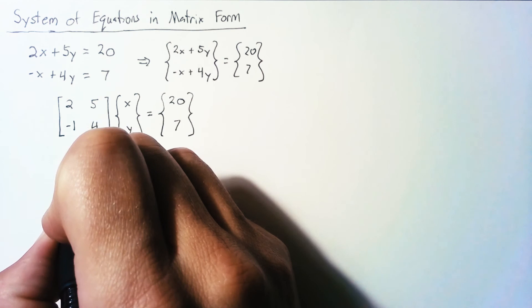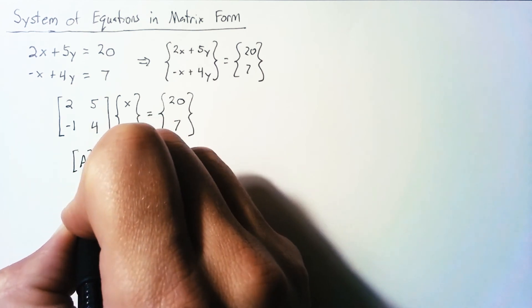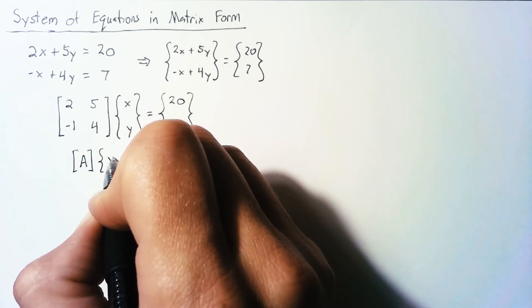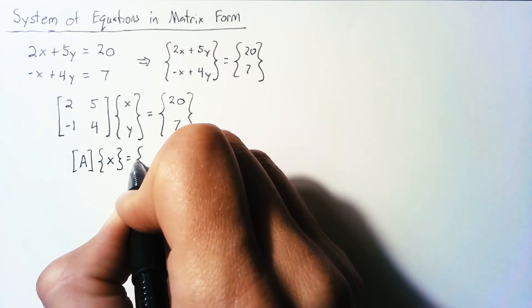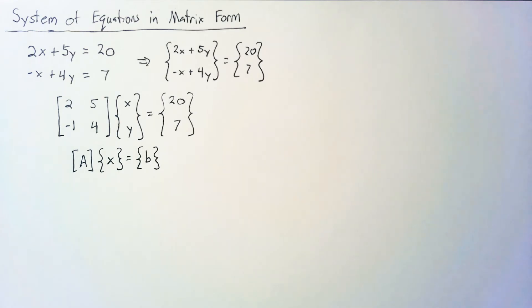And a lot of the time, we're going to write this as some matrix A multiplied by some vector x, which is going to be equal to some vector b. Ax equals b is our standard form.